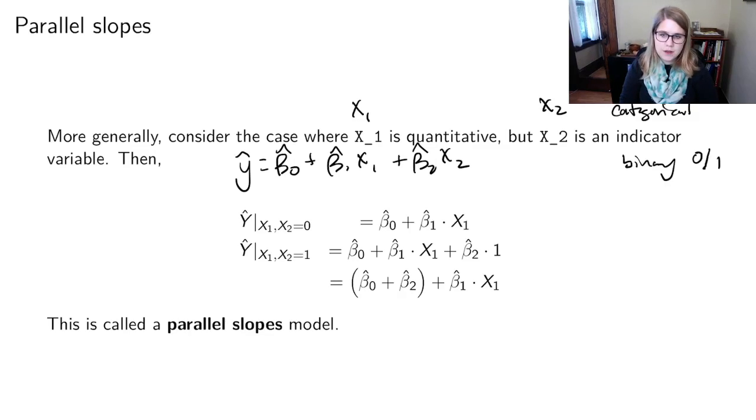And I could think about the two ways to write out the model. So I could have y hat where we have x1 and we've got x2 set equal to 0. And then the other version, y hat, where we've got x1 and then we've got x2 set to 1.